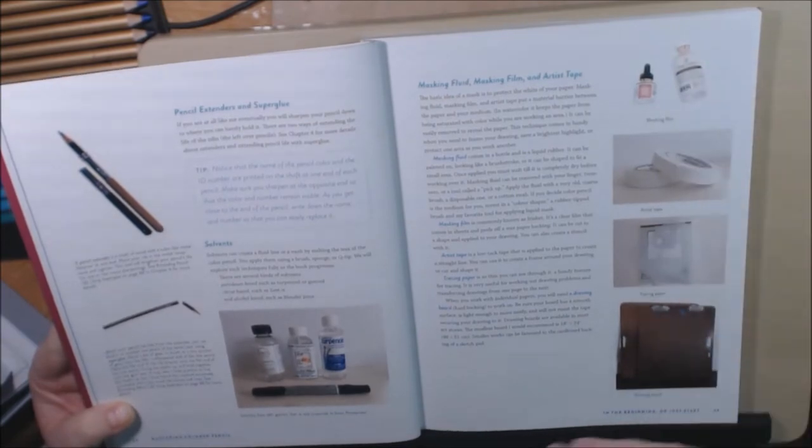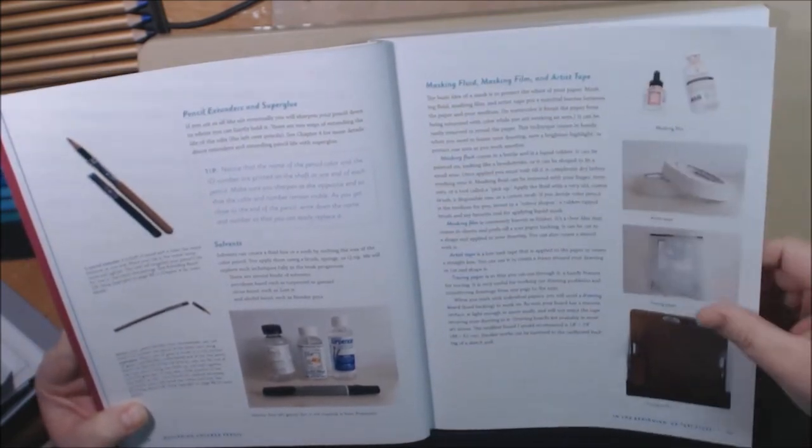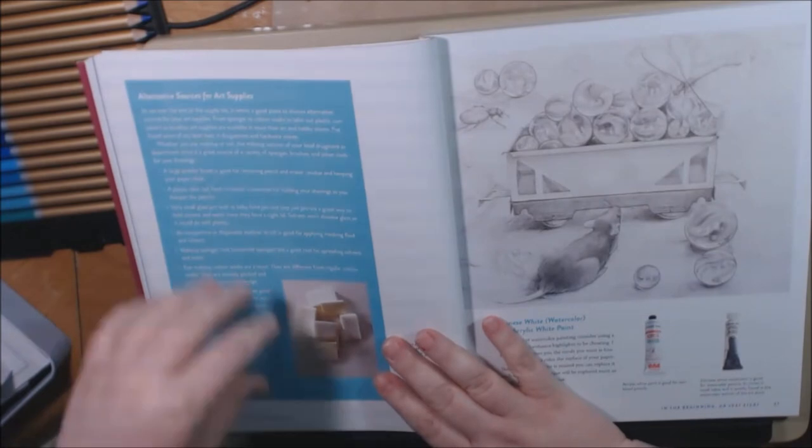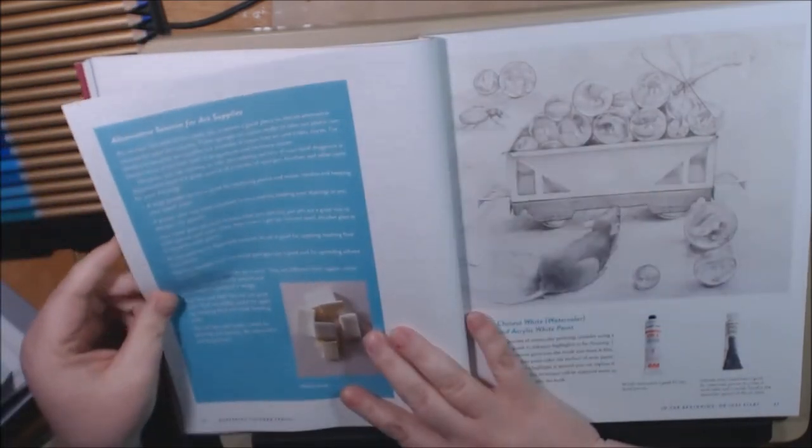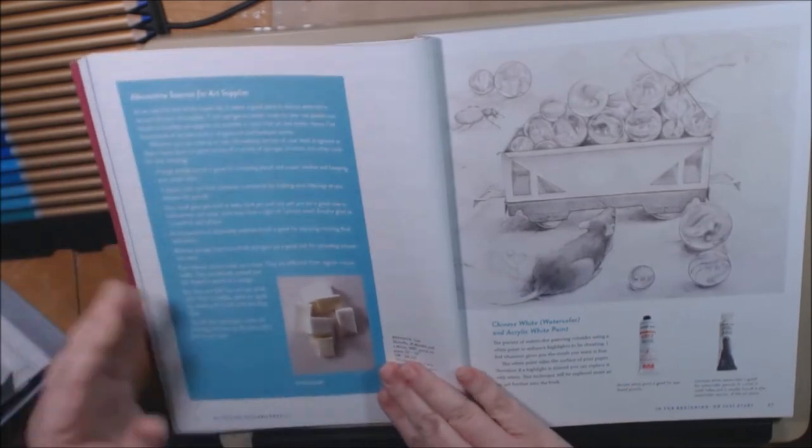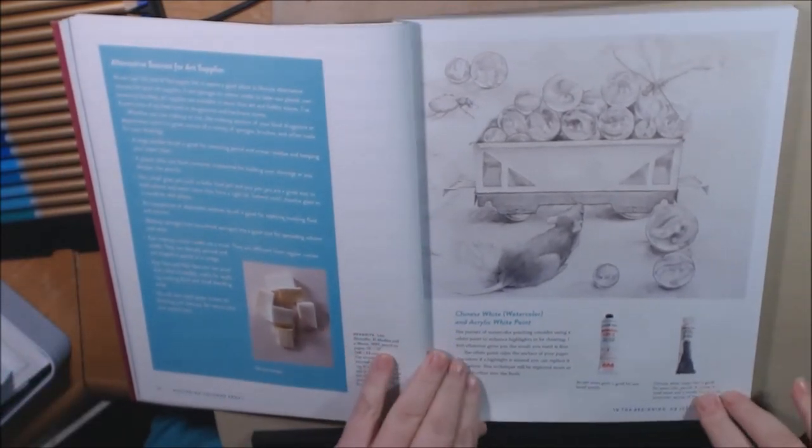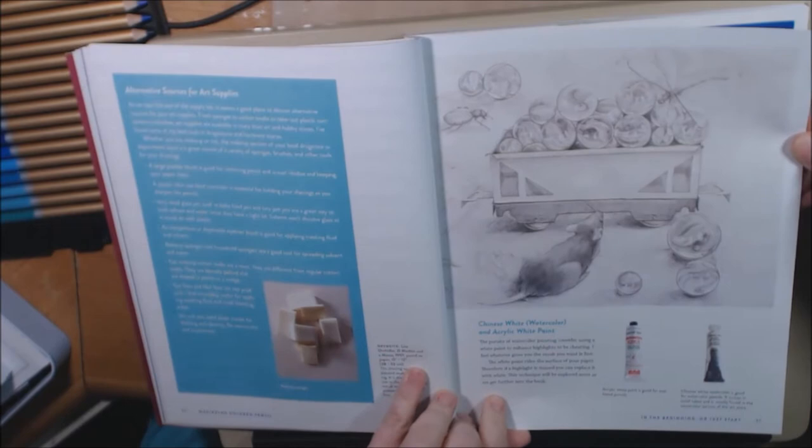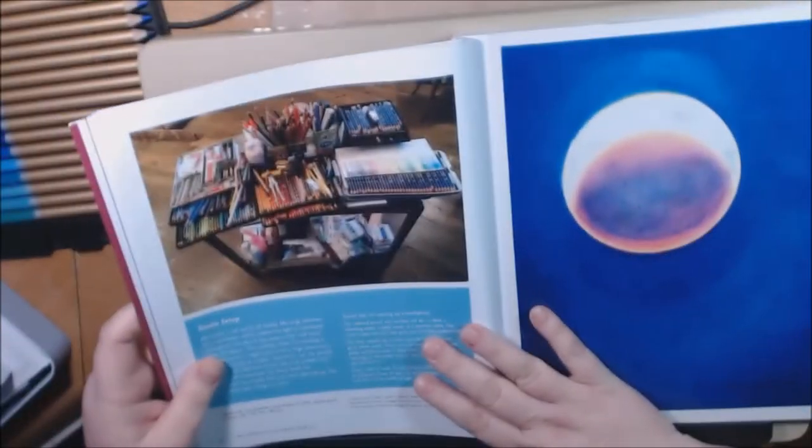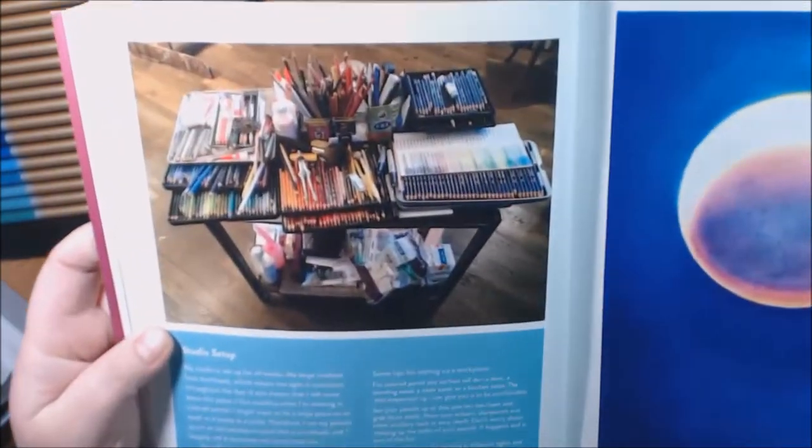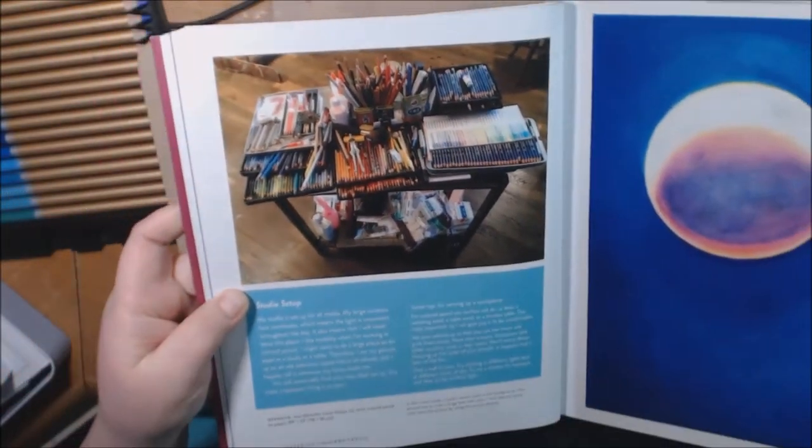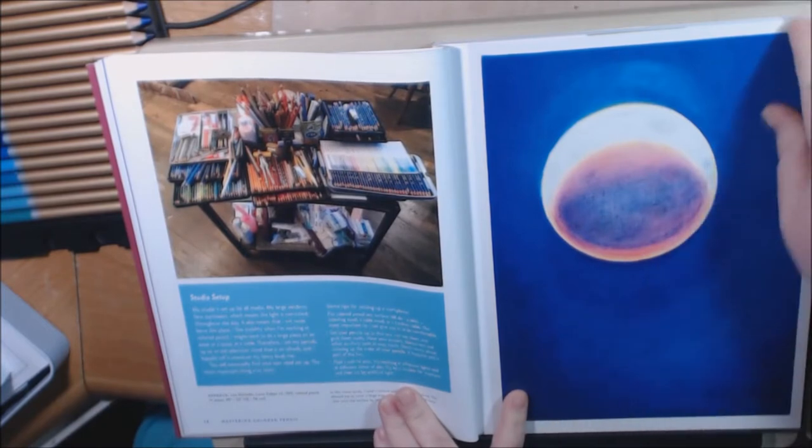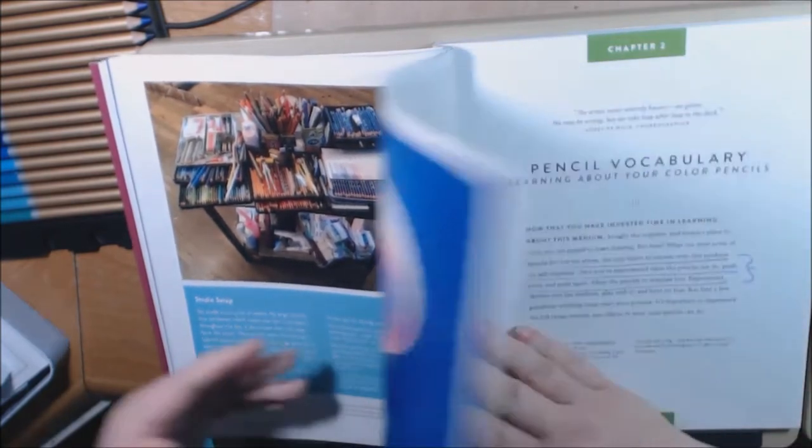And then, they tell you about pencil extenders and how to use super glue to glue when you get down to a little tiny bit on your pencil to glue it to another pencil. And just how to do that. And extenders, they go into that, and they go into all the different solvents and masking fluids. I've never tried that, but she goes into detail about all of these things. Artist tape, the masking fluid, tracing paper, artist tape. And then we have alternatives. Alternatives are sources and supplies. You know, makeup sponges and certain things. This is Chinese white watercolor and acrylic white paint. Isn't that cool, the picture? And look at this. Her studio set up. Doesn't that look like all of our stuff? Just pencils everywhere. I just want to dig it and play. And this is her picture called Lunar Eclipse. I think that's really pretty.